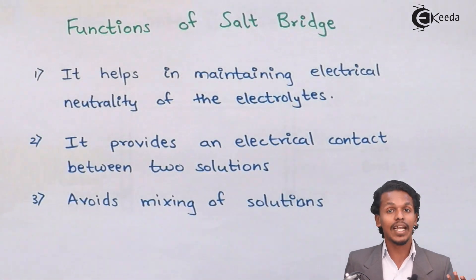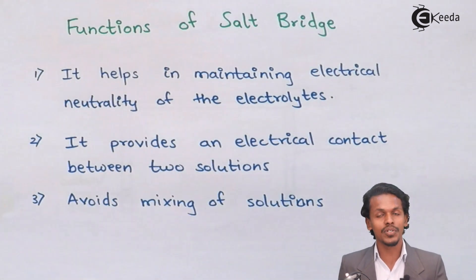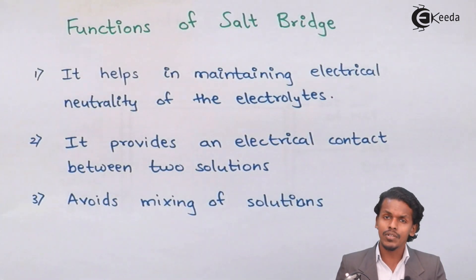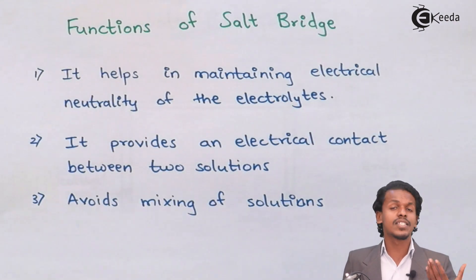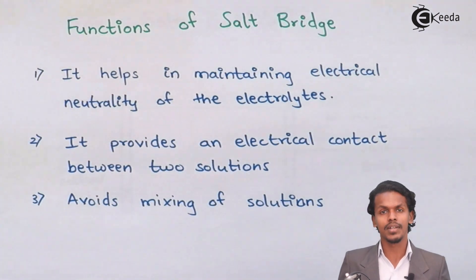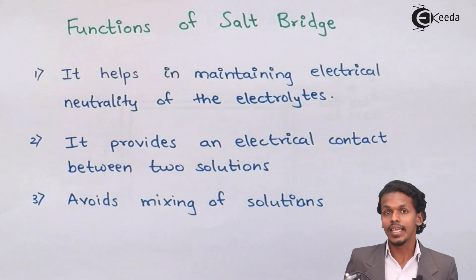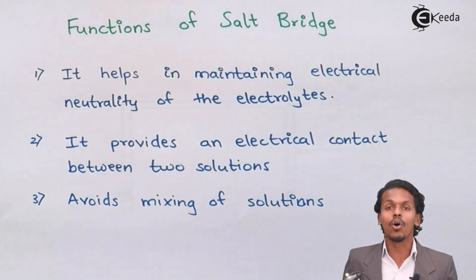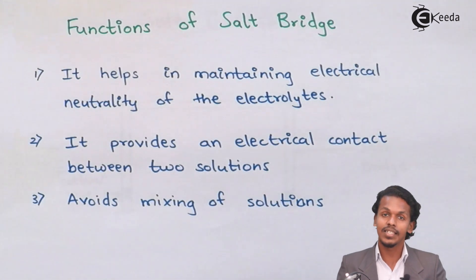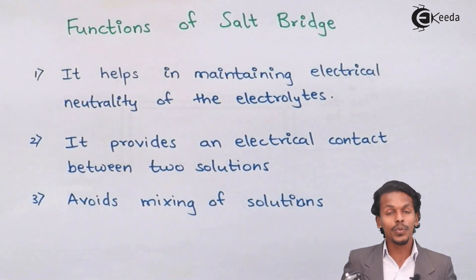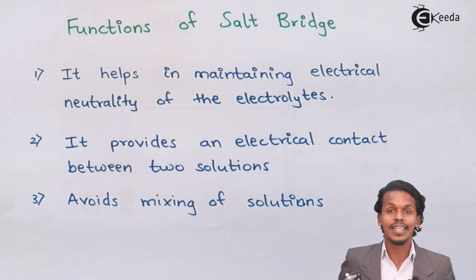Another advantage of the salt bridge is that it avoids mixing of solutions. If two solutions were mixed in a single cell, it could create a liquid junction potential. This extra potential would cause a deflection in the total E-cell, or the standard E-cell of the solution. That is the reason a salt bridge is used. These are the key functions and advantages of the salt bridge used in a galvanic cell.